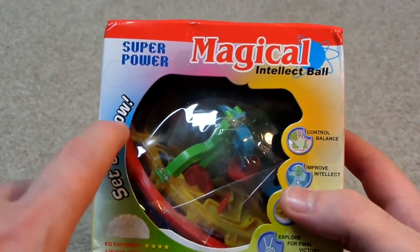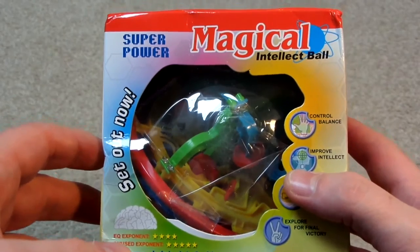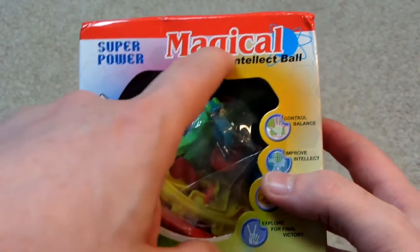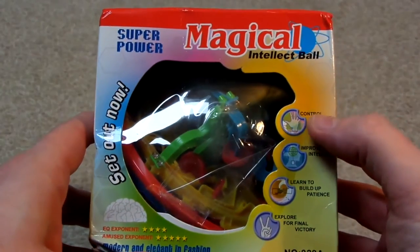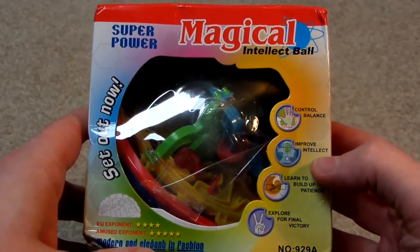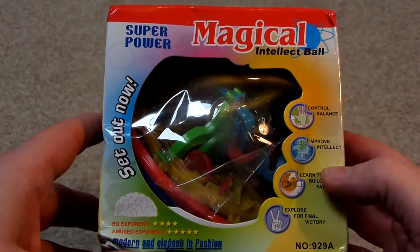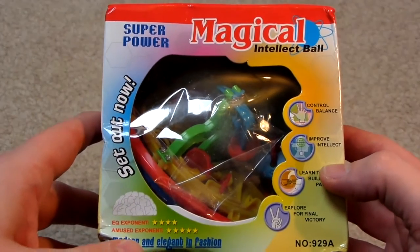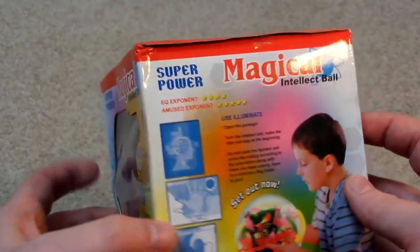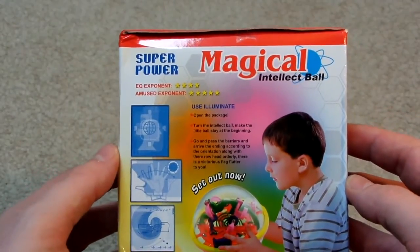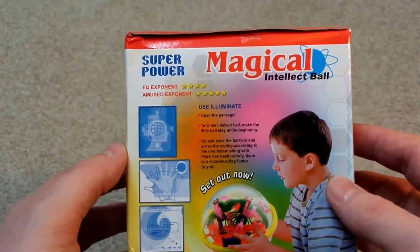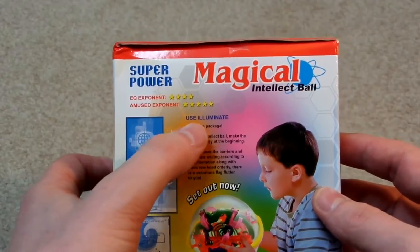So it says set out now, I don't know what that's supposed to mean. Super power. Magical intellect ball. Control balance. Improve intellect. Learn to build up patience. Explore for final victory. Modern and elegant in fashion.